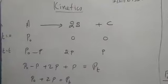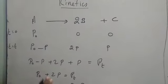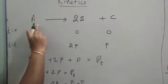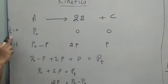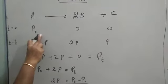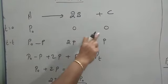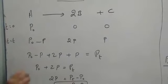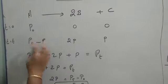Let me write this out. The given equation is A → B + C. When time is equal to 0, at initial time, the pressure of A is P₀ as given in the problem. B and C are yet to be formed, so they are at 0 condition. When time is equal to T, P amount of A is converted.